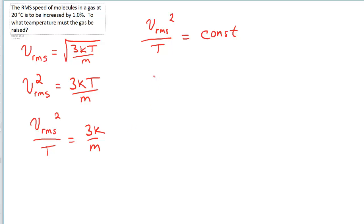So why don't we write it as a ratio? Now I'm going to drop the RMS word there and just call it V1 squared over T1. So the initial velocity squared over its initial temperature has to stay constant. So the new velocity squared over the new temperature would have to be the same value.